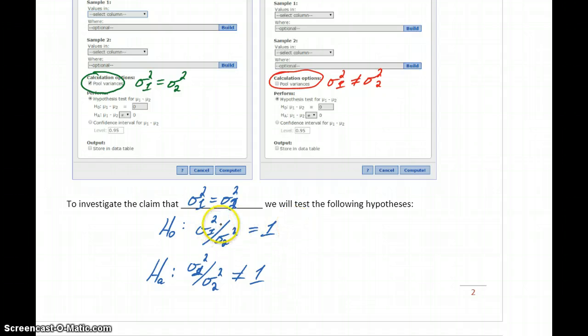If we fail to reject the null hypothesis, then we can't throw out that original assumption that our variances are equal. That would lead to the pooled t-test.